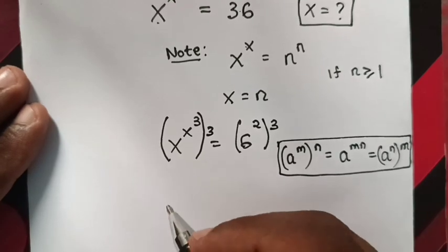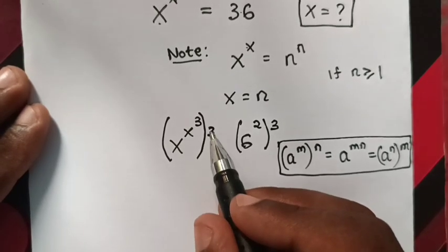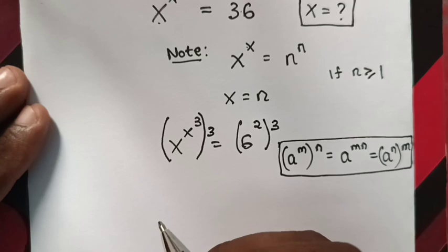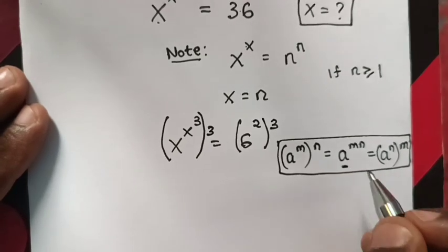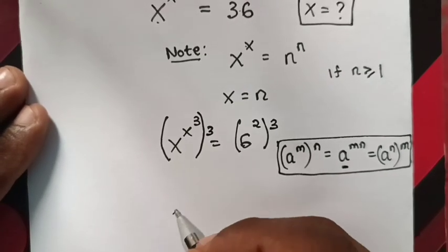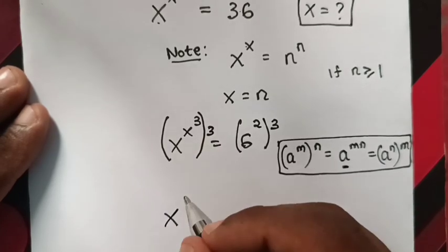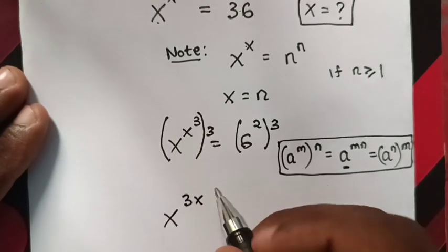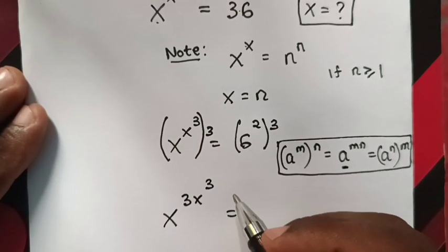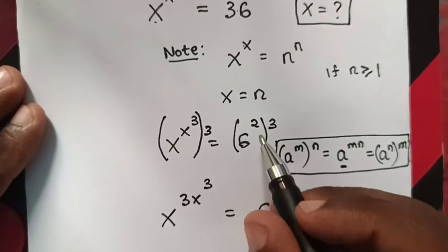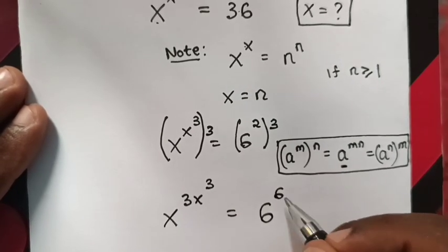When we multiply the powers 3 times x, we multiply the first powers. Here it will be x^(3x) to the power of 3 equal to 6 to the power of 6.